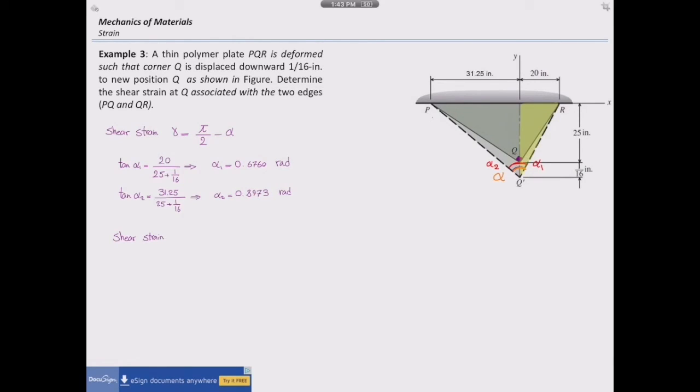How much is the total angle after deformation? It would be alpha 1 plus alpha 2. And the change in the angle which we are looking for would be pi over 2 minus alpha 1 plus alpha 2. So the change in the angle would be negative 0.00248.